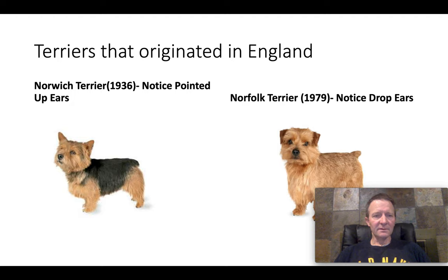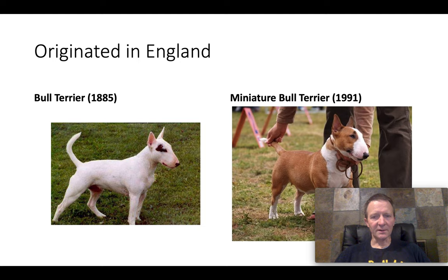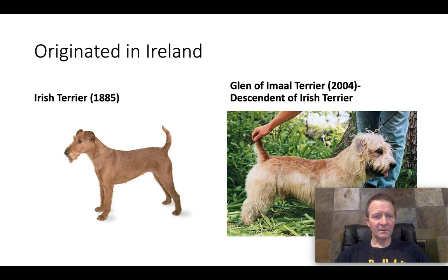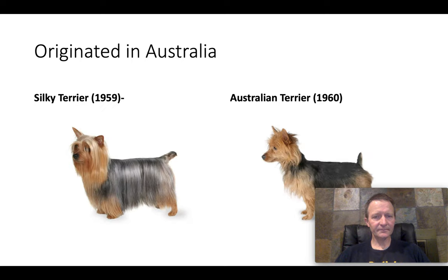Another example: there are breeds of dogs called terriers, and they're a great example. These terriers originated in England. The dates in parentheses are when the American Kennel Club officially designated them as distinct breeds. Some breeds of terriers originated in the United States — a couple of varieties of rat terriers. Then there are terriers that originated in Ireland, and other varieties that originated in Australia.